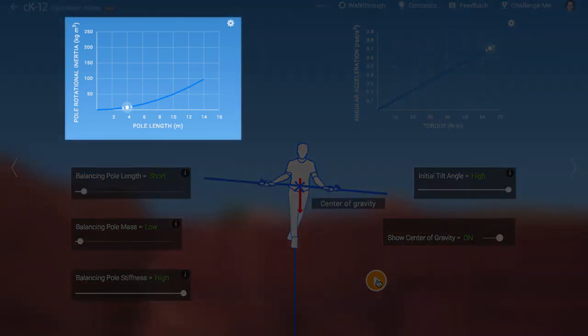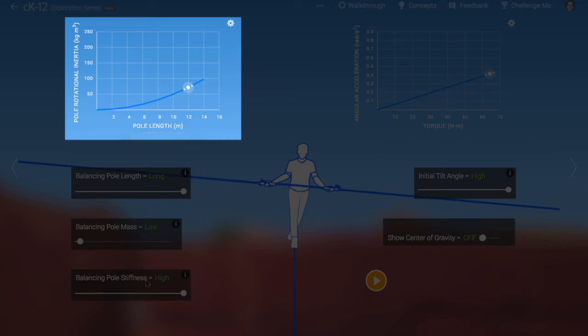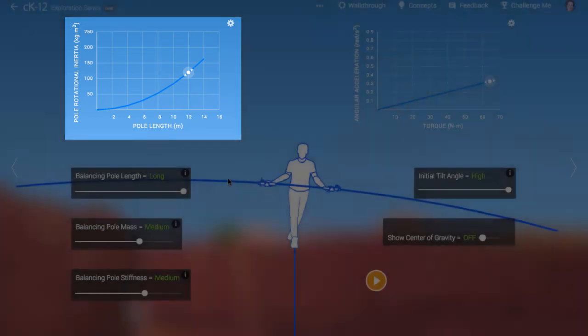The graph at left gives us an idea of how the rotational inertia, also known as moment of inertia, of the pole increases with length. It isn't a linear relationship. The inertia depends on the square of the length. This means if you double the pole length, the inertia quadruples. Longer poles really help.